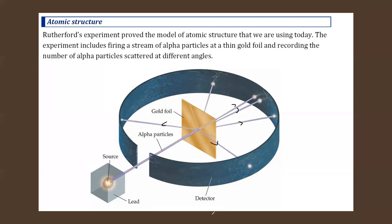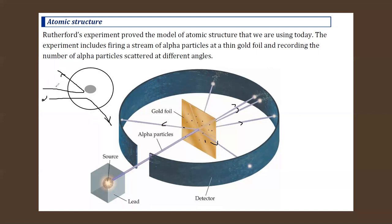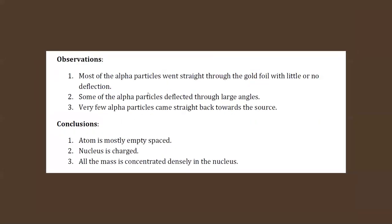A few alpha particles deviated from the path and a few bounced back. Since most alpha particles were able to pass through or penetrate, it shows that a major portion of the gold foil - or of the atom - is empty. That's why most alpha particles are able to pass through. A few deviated from their path because the nucleus and alpha particle have identical charges, so like charges repel.